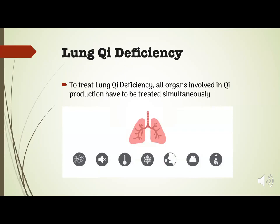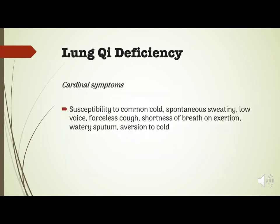To treat lung chi deficiency, all organs involved in chi production have to be treated simultaneously. That means the kidneys, the lungs, and the spleen.